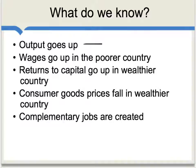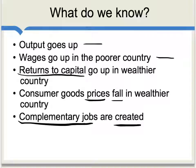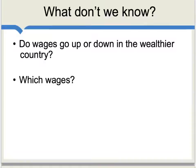What do we know about offshoring? We know global output goes up. We know that wages tend to go up in the poorer country. Returns to capital tend to go up in the wealthier country. In the wealthier country, consumer goods prices will fall because goods and services are cheaper. Also, complementary jobs are created by offshoring. For instance, if you call a foreign country for help with your Apple product, you're more likely to buy Apple products, which creates jobs in the United States selling Apple products to consumers.